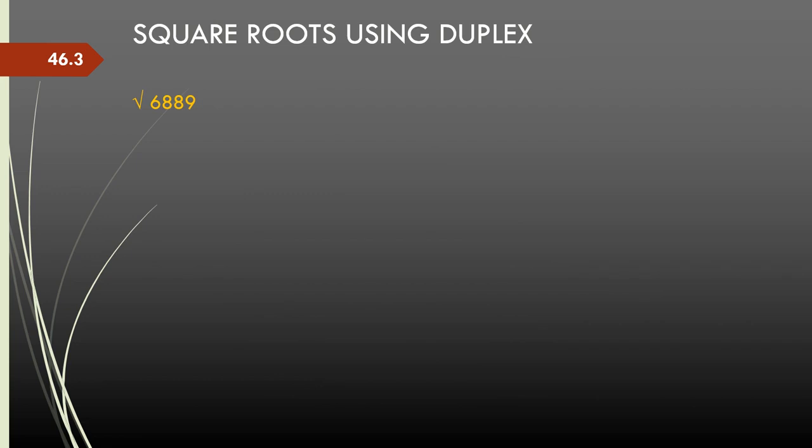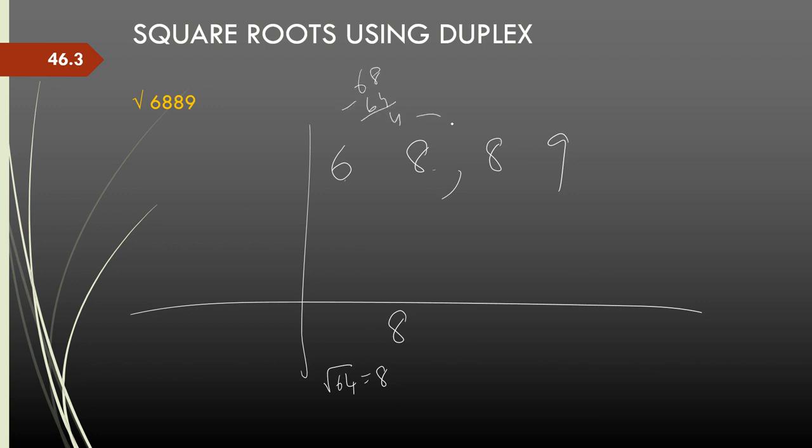Let us look at one more example. Let us say we have 6889. So again two digits in the answer before we hit square root, before we hit the decimals. So 68, the perfect square less than 68 is 64 and square root of 64 is 8. So I write 8 here. Now, 68 minus 64 is 4. Now this 4 goes to the next stage as carry forward. So that becomes 48.